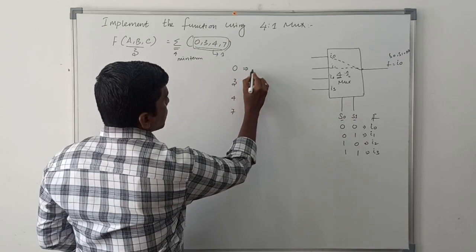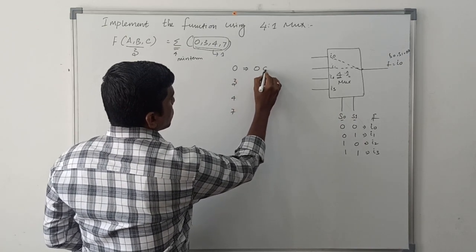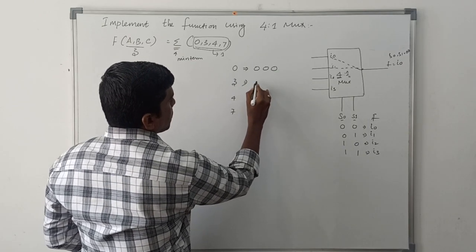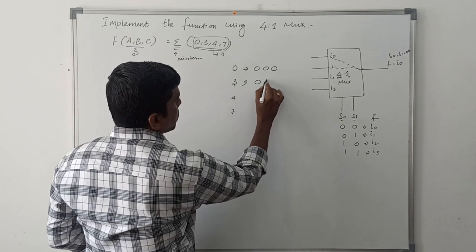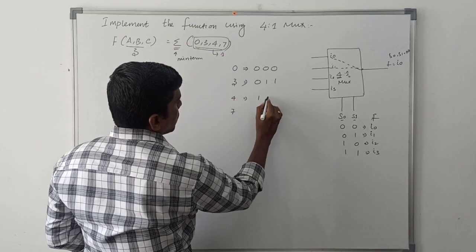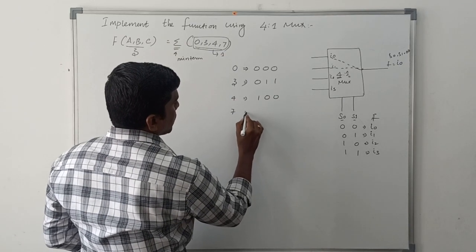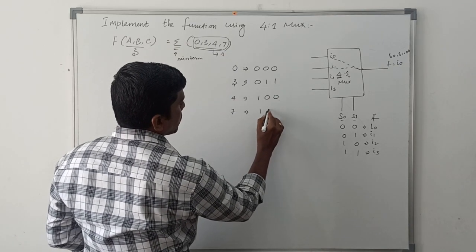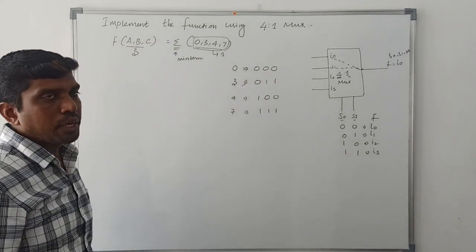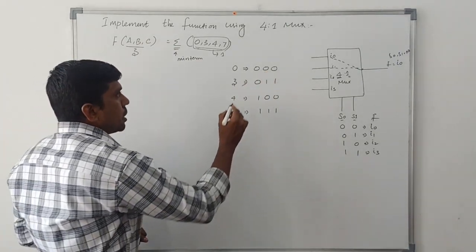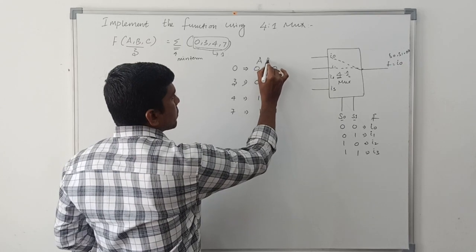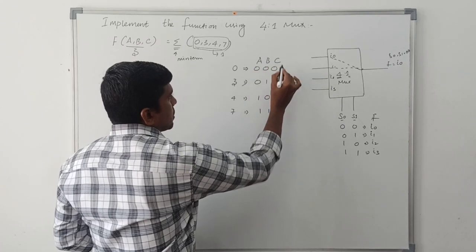Minterm 0 represents 000. Minterm 3 represents 011. Minterm 4 represents 100. Minterm 7 represents 111. This is a 3-variable input, so I assign the input variables A, B, and C.